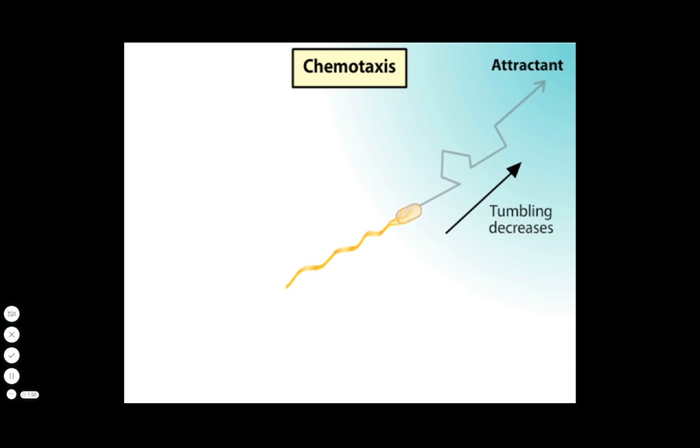The pattern of movement in chemotaxis is called a biased random walk, in which the cell tends to migrate toward the attractant. In contrast, a random walk has more frequent changes in direction and shorter runs.